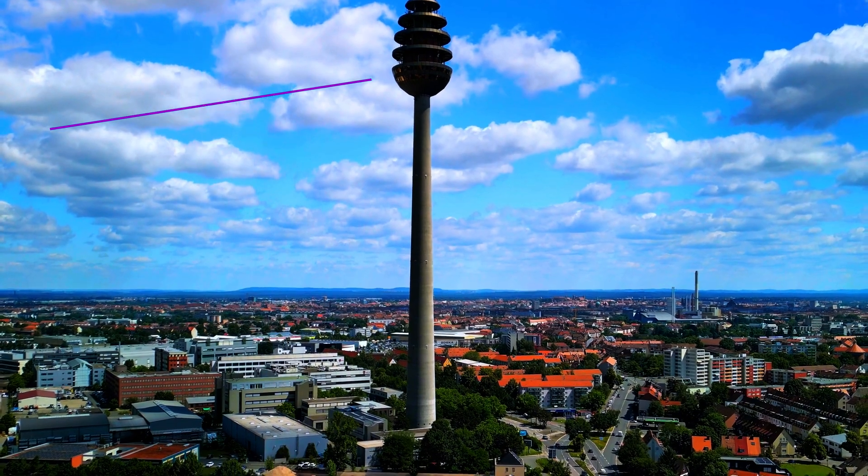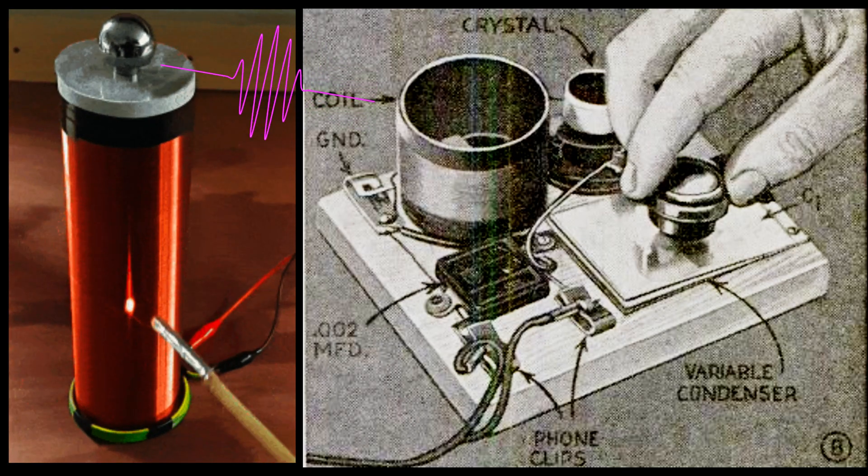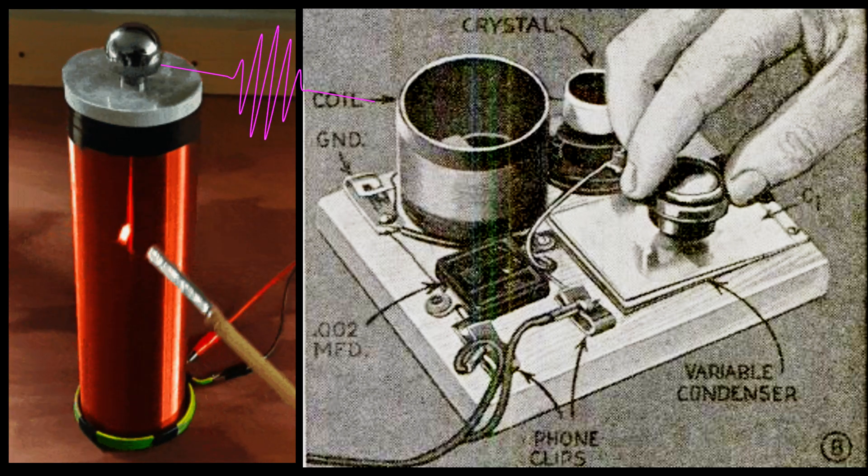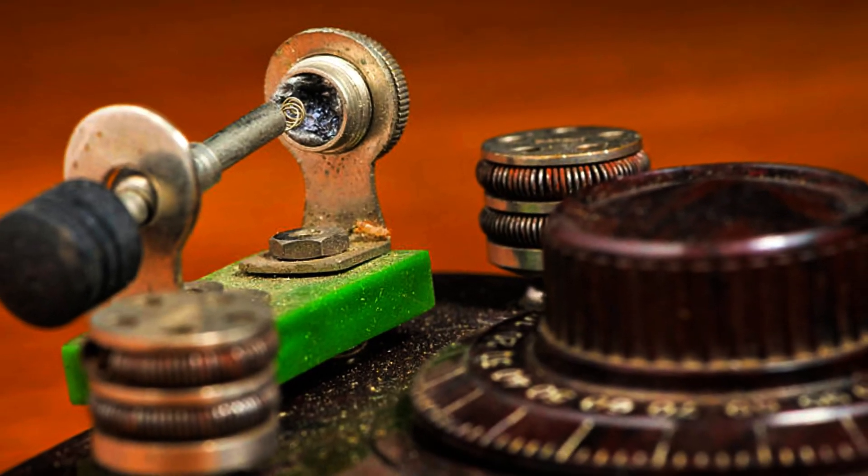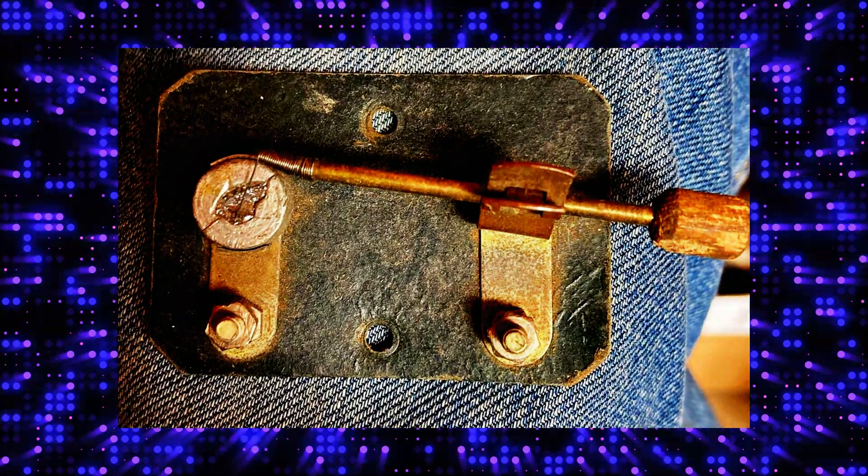First, the antenna captures radio waves from the air. These waves are then filtered and tuned by the coil and capacitor, which are adjusted to resonate at the desired frequency. The tuned signal is passed through a diode.